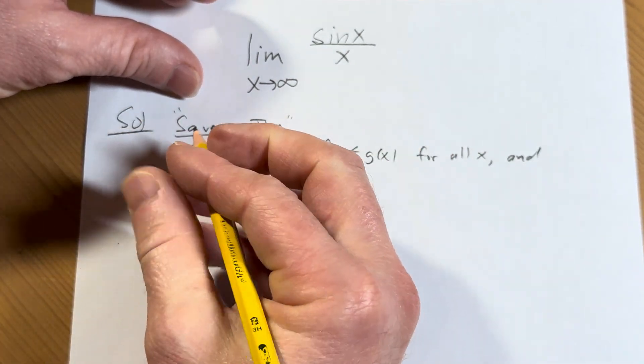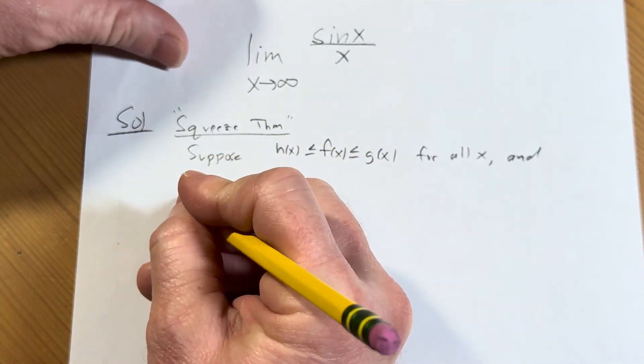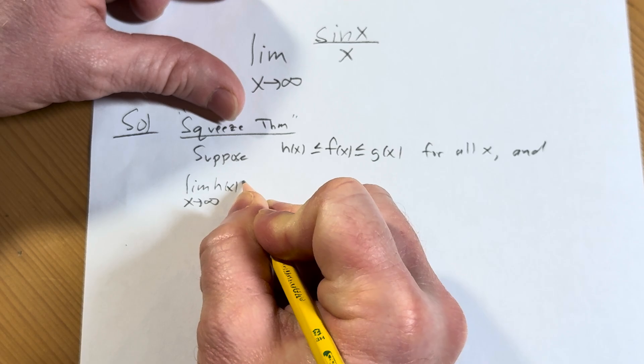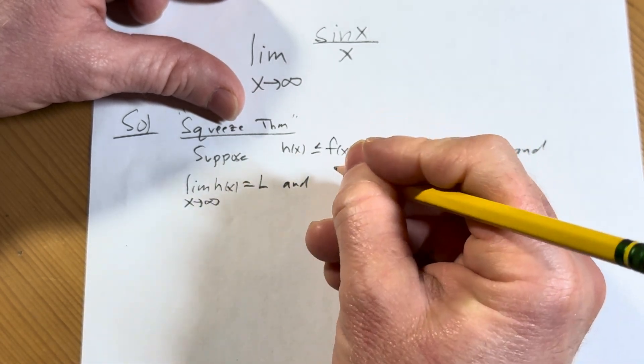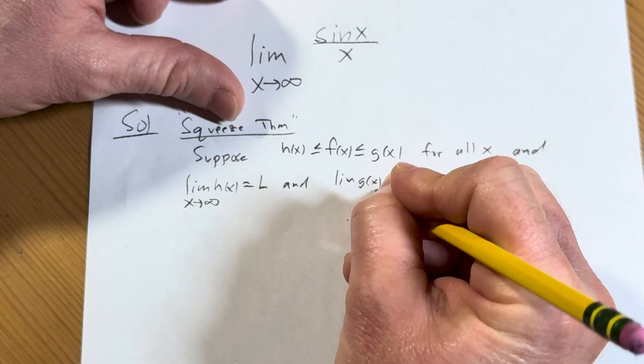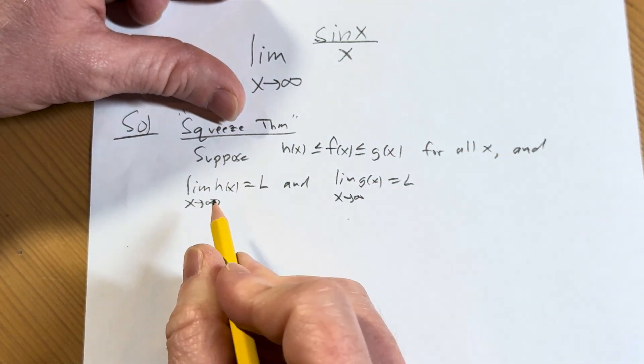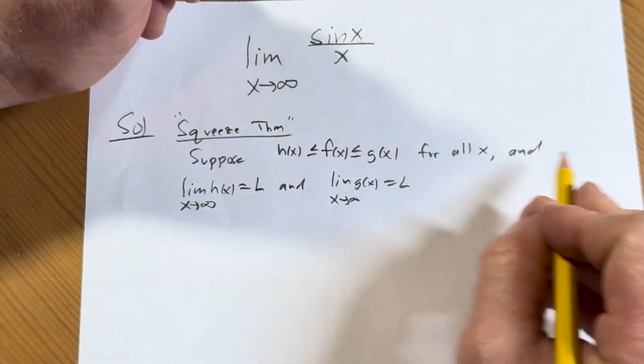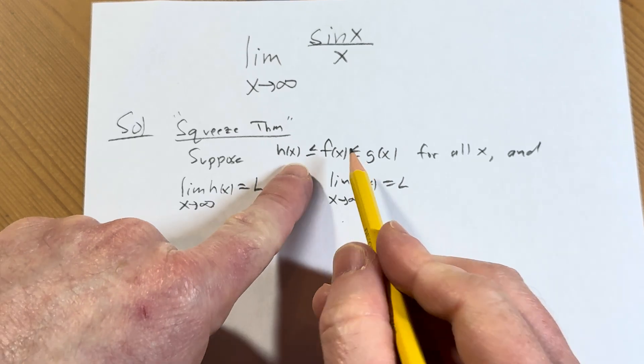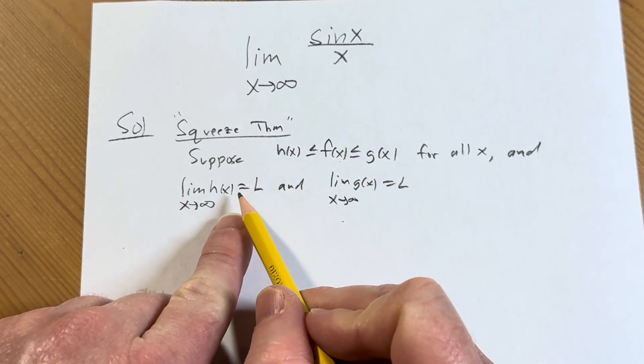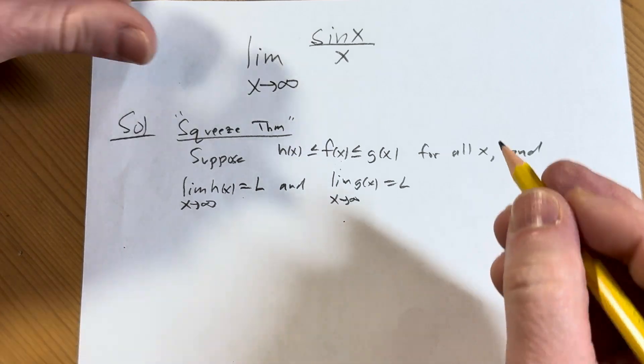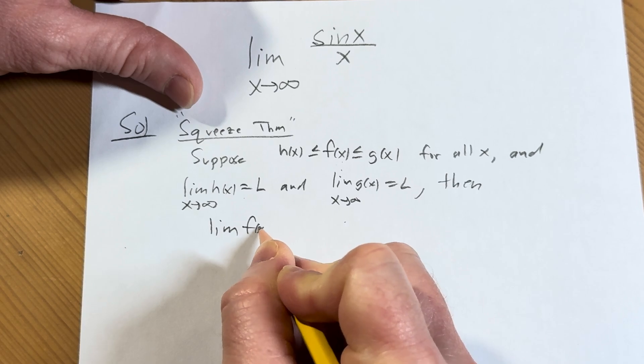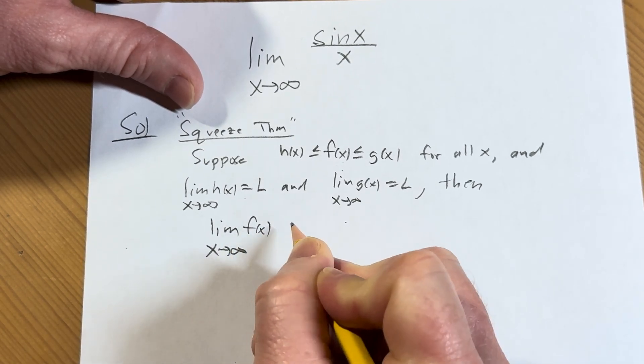And let's say that the limit as x approaches infinity of h of x equals L, and also the limit of g of x as x approaches infinity is equal to L. So we have that the limit of h of x as x approaches infinity is equal to L, and the limit of g of x as x approaches infinity is equal to L. So we have both of those conditions, and we have this inequality. Well, what's going to happen? Well, f is trapped between these two. If this is approaching L, and this is approaching L, well, f has nowhere to go. So if you have these conditions, then this says that the limit of f of x as x approaches infinity is equal to L.